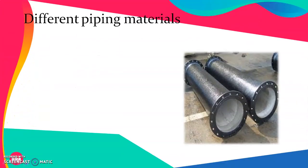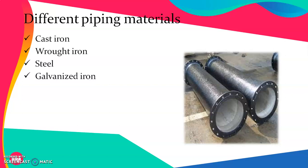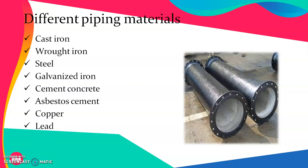Let's understand the different types of piping materials available. They are cast iron, wrought iron, steel, galvanized iron, cement concrete pipes, asbestos cement pipes, copper pipes, lead pipes, PVC pipes, etc. Out of these, for conveyance of water from a source to the water treatment plant and from the water treatment plant to individual customers, cast iron is the material that is dominantly used. In this session, we will understand cast iron or CI pipes in detail.